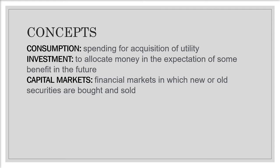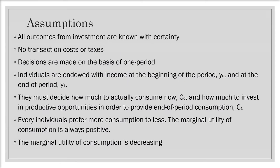We assume that all outcomes from investment are known with certainty, there are no transaction costs or taxes, and decisions are made on the basis of one period. Individuals are endowed with income at the beginning of the period, Y0, and at the end of the period, Y1. They must decide how much to consume now, C0, and how much to invest in productive opportunities to provide end-of-period consumption C1. Every individual prefers more consumption to less — the marginal utility of consumption is always positive but decreasing, as the increase in utility diminishes with every additional unit consumed.